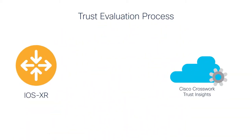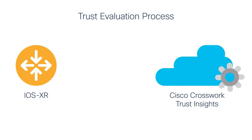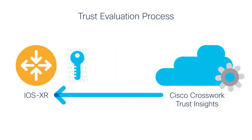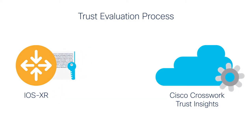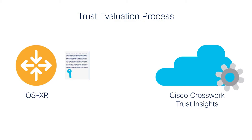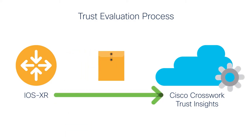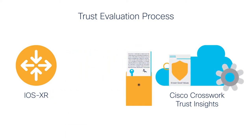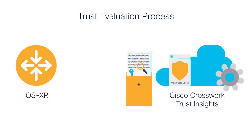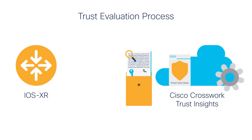The trust evaluation process with Cisco CrossWork Trust Insights works as follows: the trust verification service requests the dossier along with a nonce value. The device gathers the measurements along with the nonce value and creates the attestation dossier. This is then signed and returned to the verification service, which validates the signature, verifies the nonce value, and compares the measurements against Cisco published known good values.